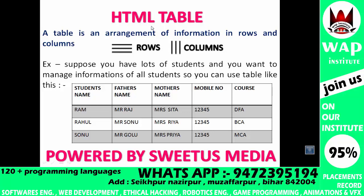A table is an arrangement of information in rows and columns. Table can be used to manage the information in a systematic way, which can be very comfortable for any person. In a table there are two elements: horizontal lines which are rows, and vertical lines which are columns.